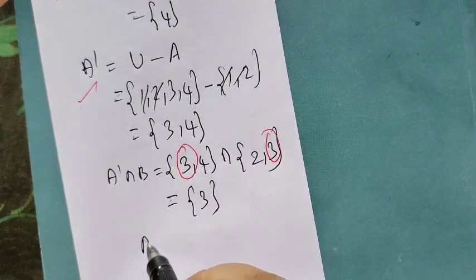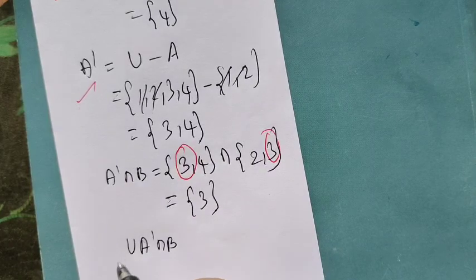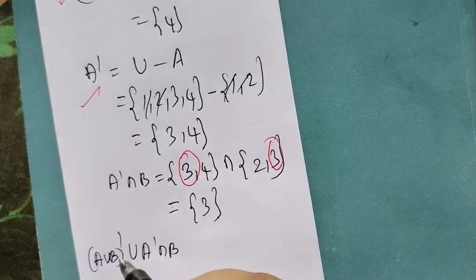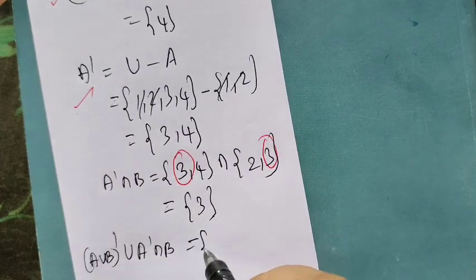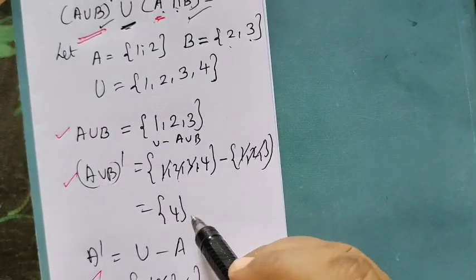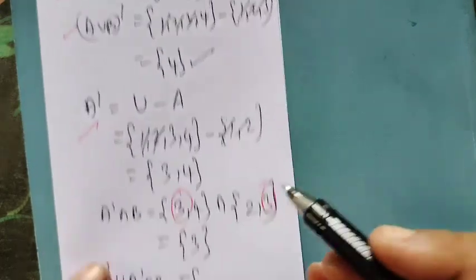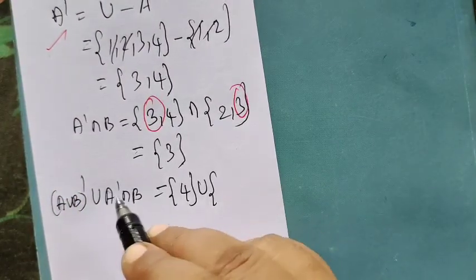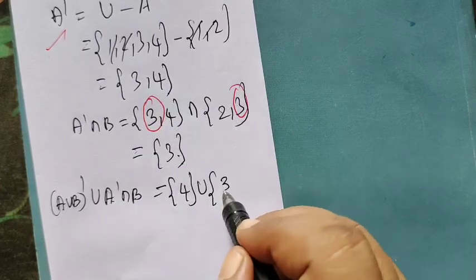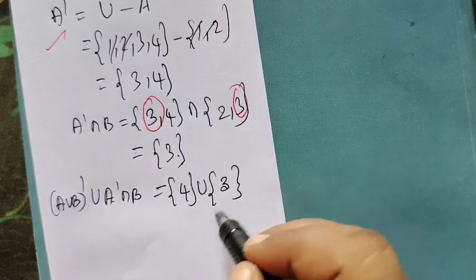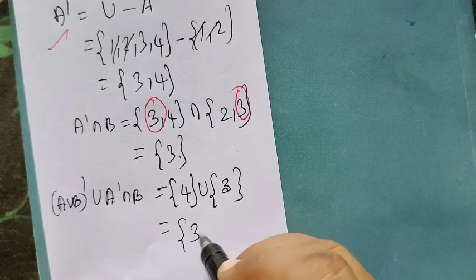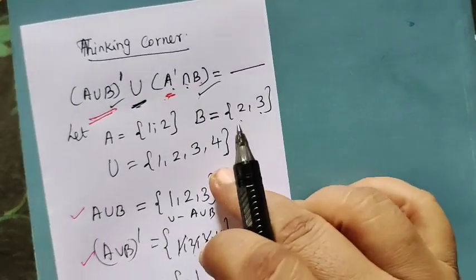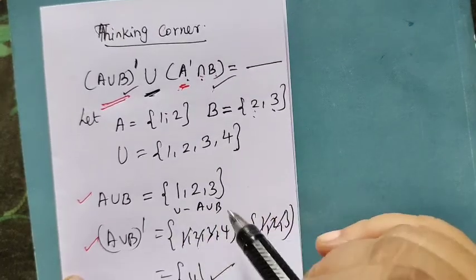This should just do a union here. That is A dash intersection B, union A union B whole dash. If you do union, A union B whole dash is 4. So this is 4. Then union A dash intersection B is 3. So {3,4}.